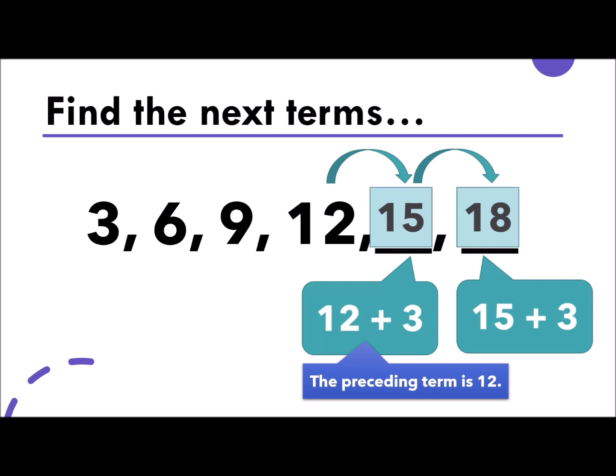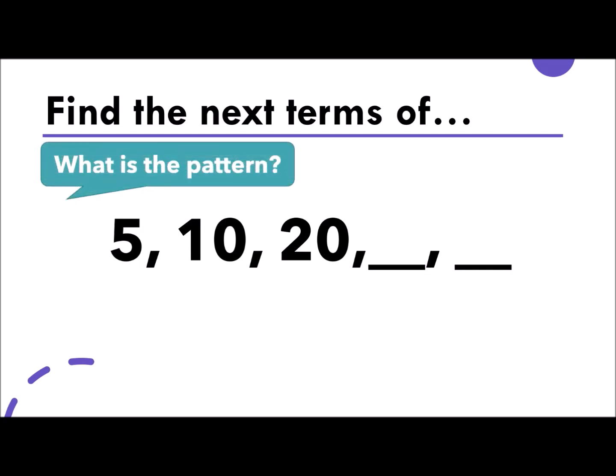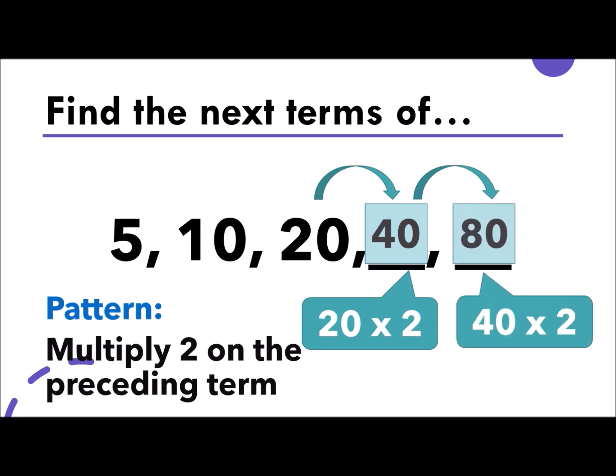Let's try another one. Find the next terms of 5, 10, 20. And we have two blanks. What do you think is the pattern? Are we going to add, subtract, multiply, or divide? Okay. Good job. The pattern here is, we need to multiply 2 on the preceding term. So, the preceding term is 20. We're going to multiply 2. So, the answer is 40. For the next missing term, we continuously multiply 2. So, that is 40 times 2. That is 80. Okay. Again, we need to look for the pattern before we proceed on finding the next terms.